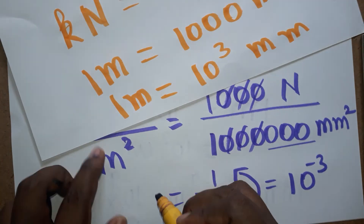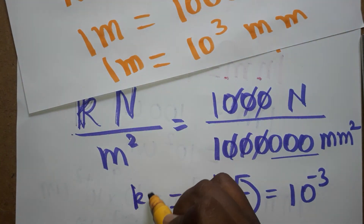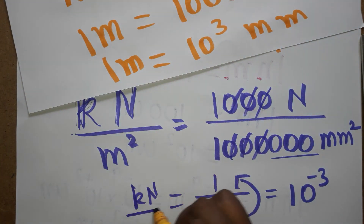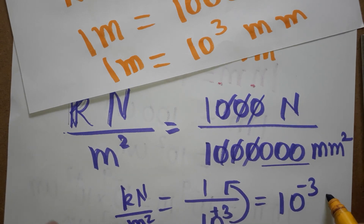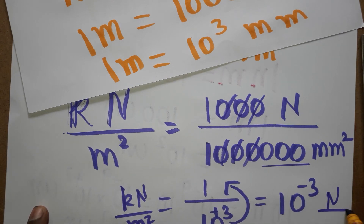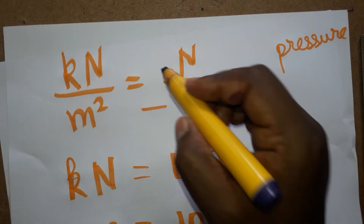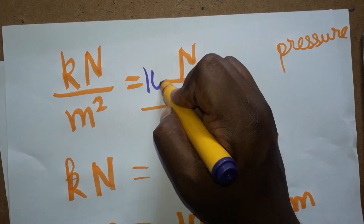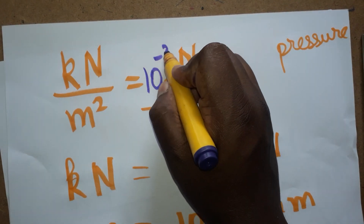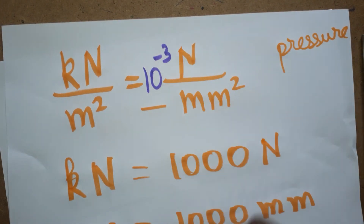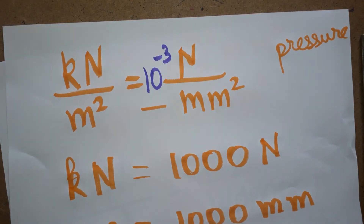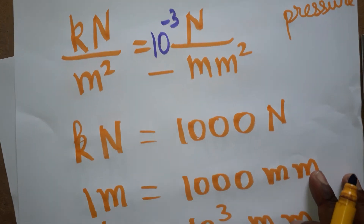Bringing 10 power 3 from the denominator to the numerator changes the sign, giving us 10 power minus 3. So 1 kilo Newton per meter square equals 10 power minus 3 Newton per millimeter square. Thank you for watching my channel. If you like my channel, please subscribe.